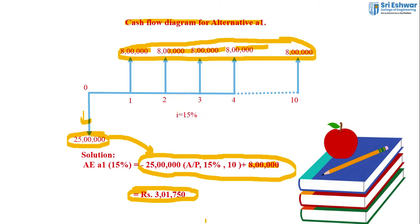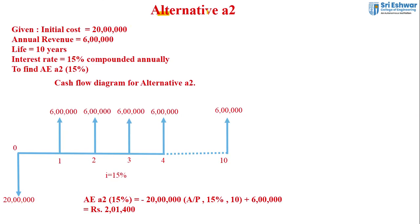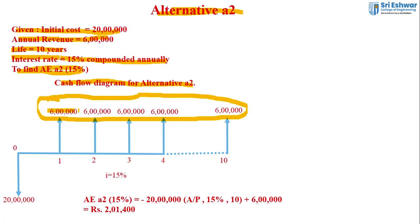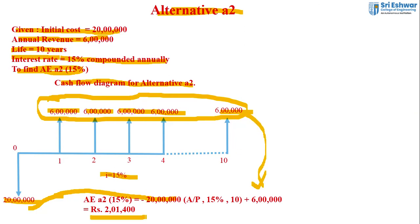The final answer for Alternative A1 is rupees 3 lakh 1,750. For Alternative A2, the initial cost is 20 lakh, annual revenue is 6 lakh, life is 10 years, and interest rate is 15% compounded annually. The Annual Equivalent for 15% is: minus 20 lakh × (A/P, 15%, 10) plus 6 lakh. The final answer is 2 lakh 1,400.